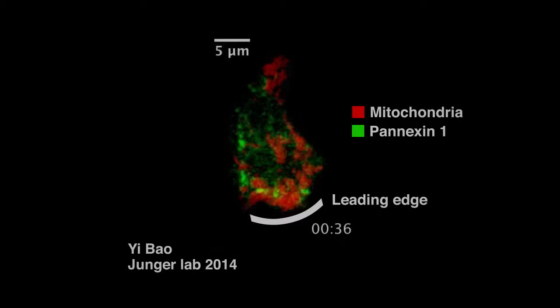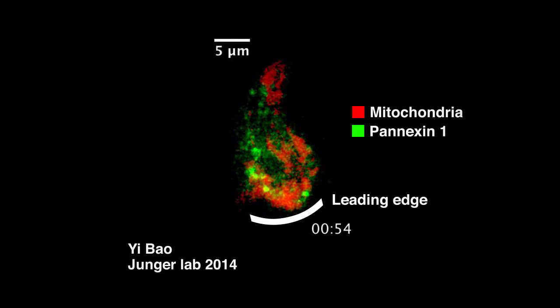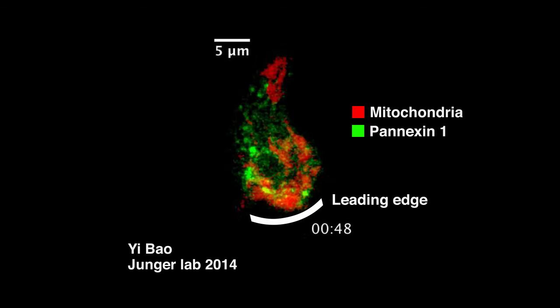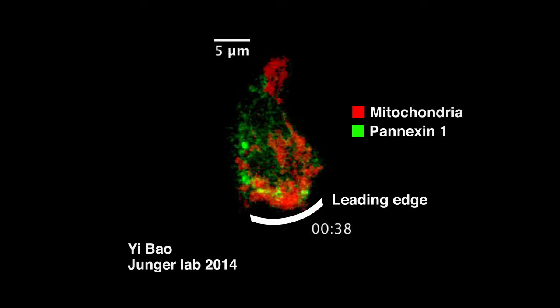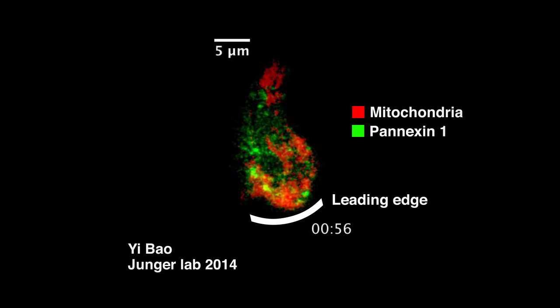The co-localization of mitochondria with Pannexin-1 can be seen with microscopy. In this live cell imaging video, green fluorescent Pannexin-1 fusion proteins translocate to the leading edge together with mitochondria that have been labeled with mitotracker red.